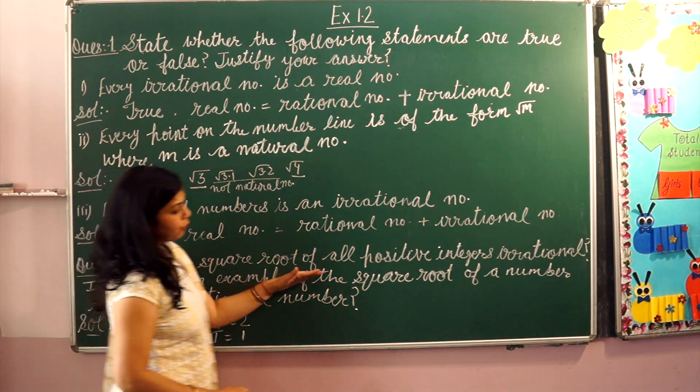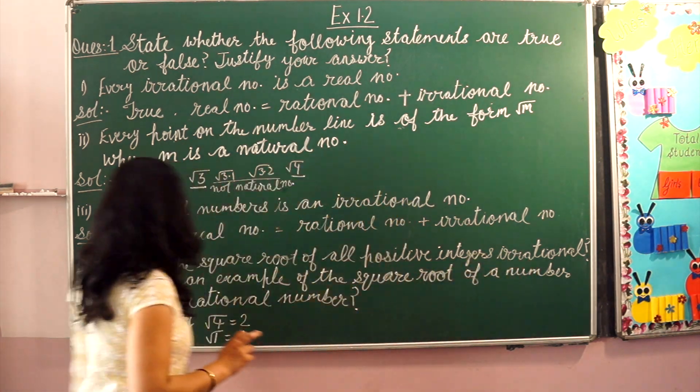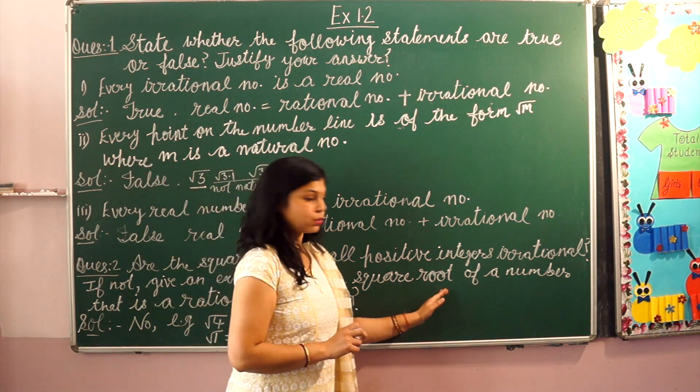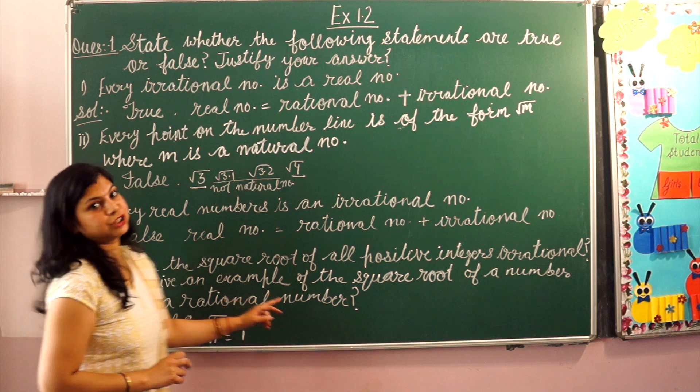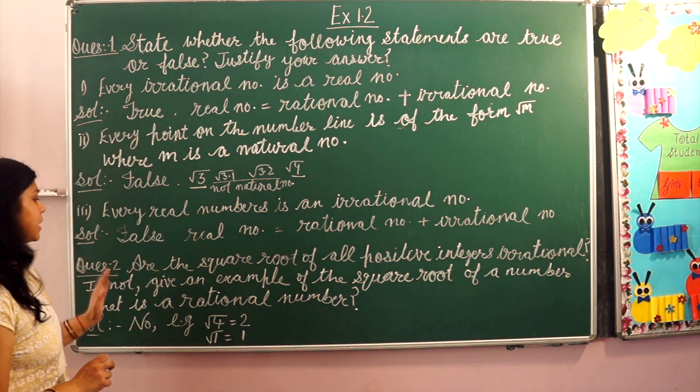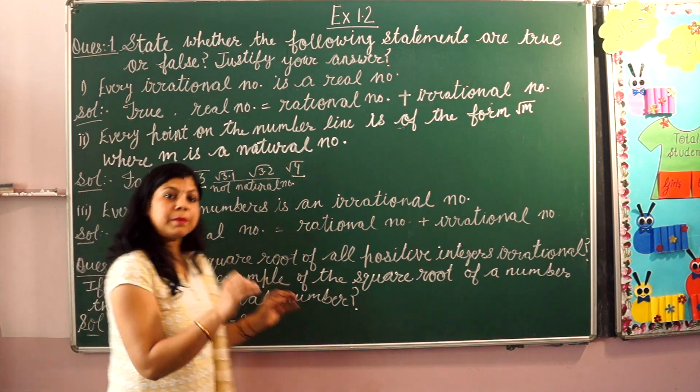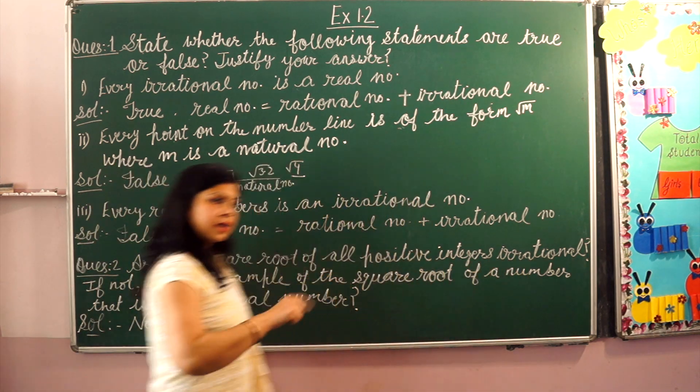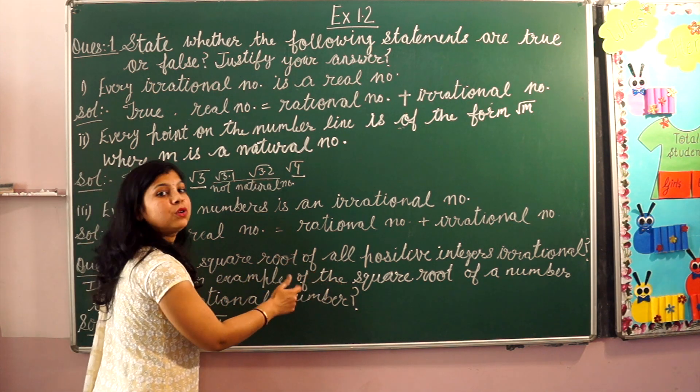Our next question is question number 2. Are the square roots of all positive integers irrational? If not, give an example of the square root of a number that is rational.